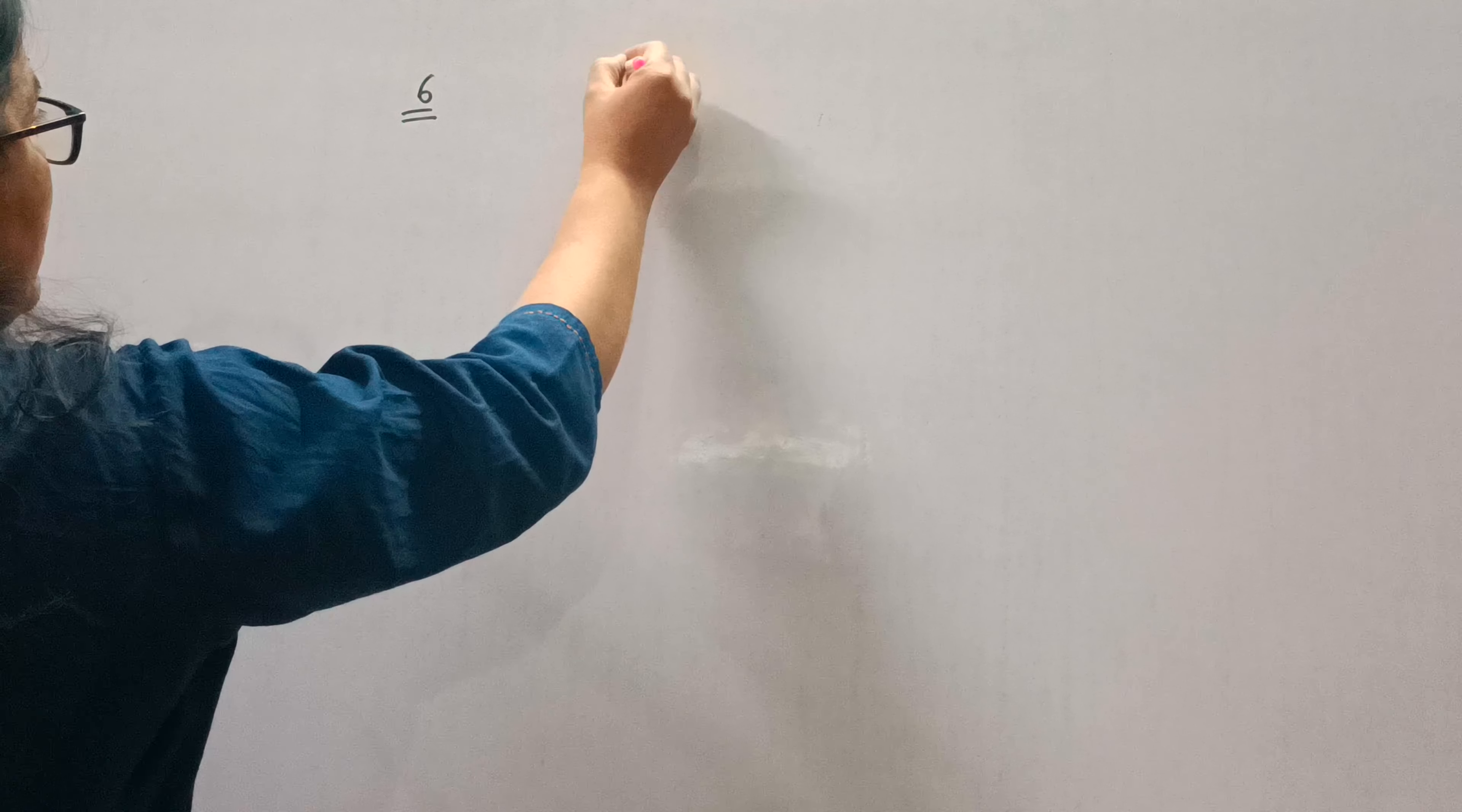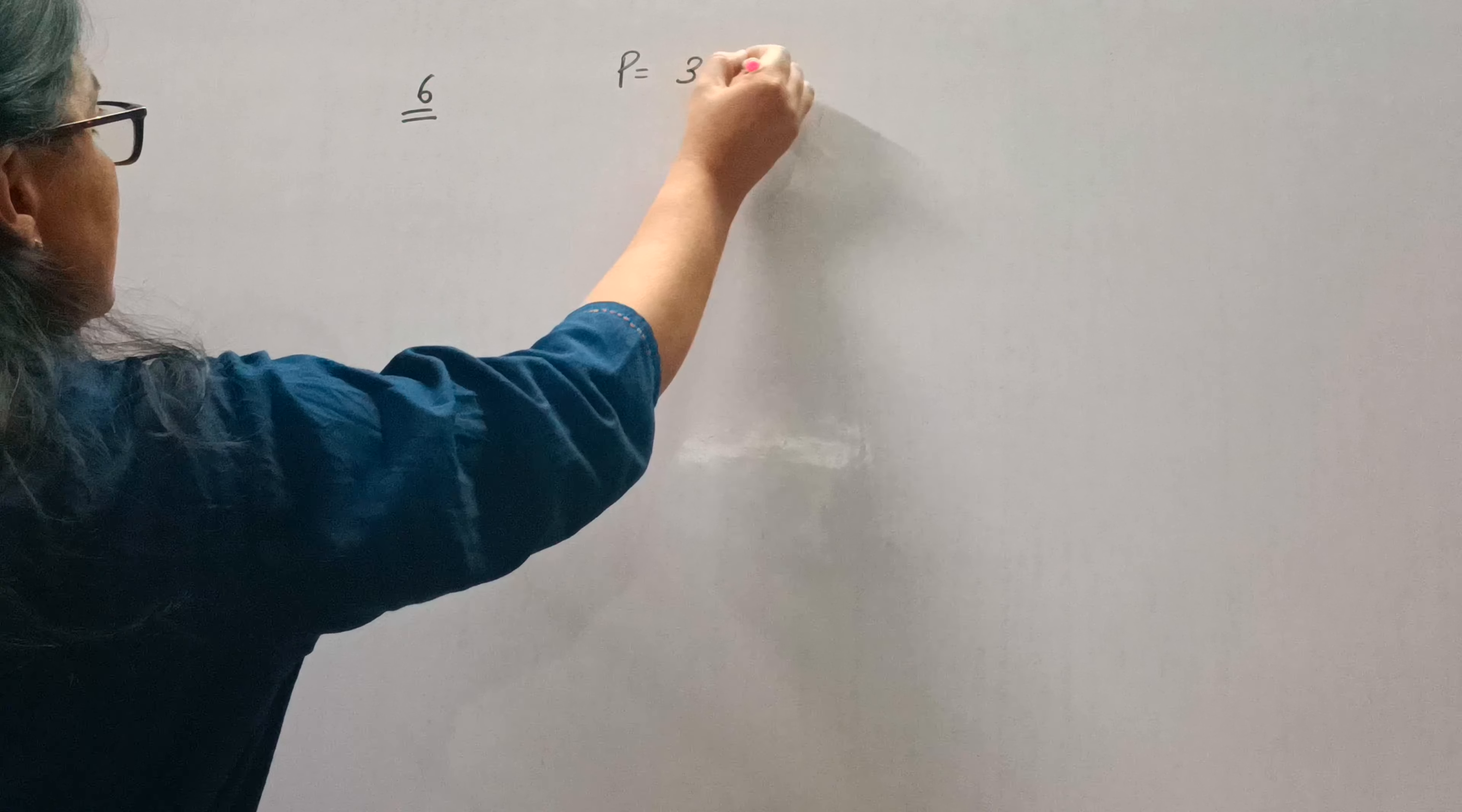Greetings everyone, today we will do question number 6 of exercise 12.1. The question is: An isosceles triangle has perimeter 30 cm.